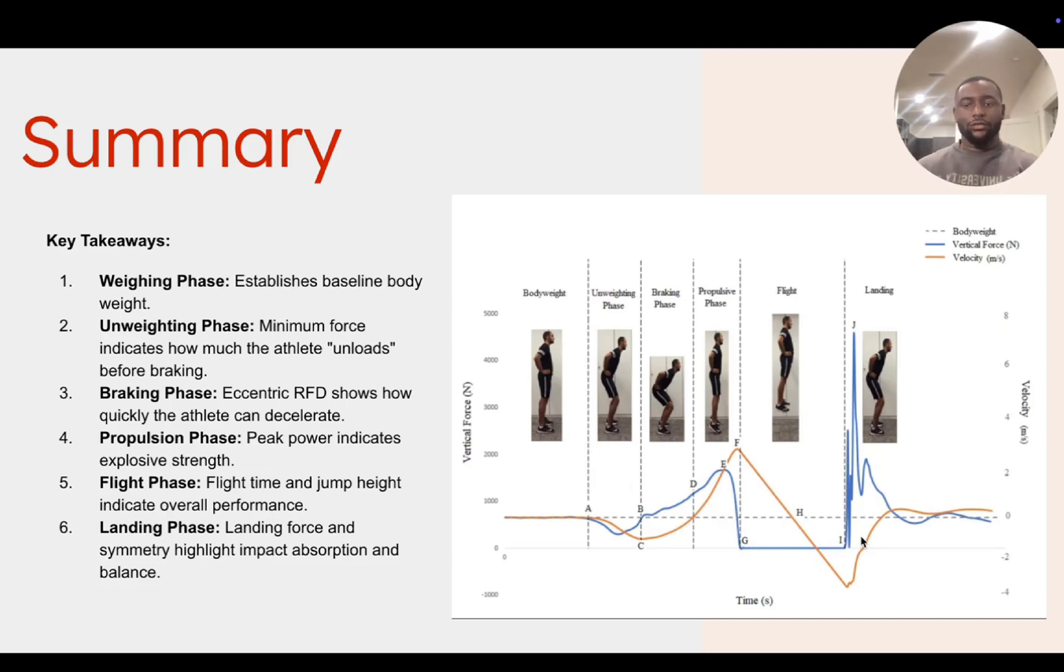So just to read all of them again for the key takeaways, we have established baseline body weight is the weighing phase. Unweighting phase is minimum force indicates how much athlete unloads before breaking. The breaking phase is the eccentric rate of force development shows how quickly the athlete can decelerate. Propulsion phase is correlated with peak power indicates explosive strength. Flight phase is the flight time and jump height indicate basically overall performance. And then the landing phase has to do with landing forces, the symmetry highlighted on the impact of absorption and balance.